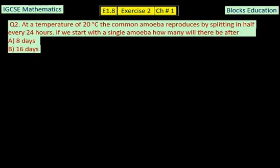In question number two, it says at a temperature of 20 degrees Celsius, the common amoeba reproduces by splitting in half every 24 hours. If we start with a single amoeba, how many will there be after 8 days, and in B part 16 days? It means that after every 24 hours this amoeba is splitting itself.